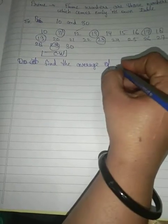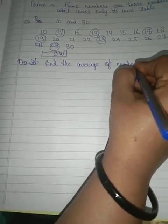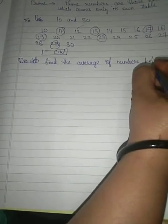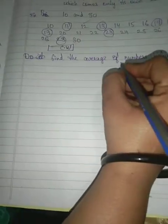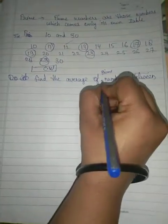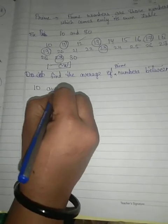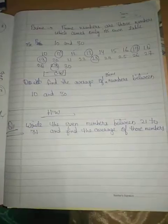Find the average of numbers between 10 and 30. It means these numbers which is in circle. You will find out the average. This is your homework.